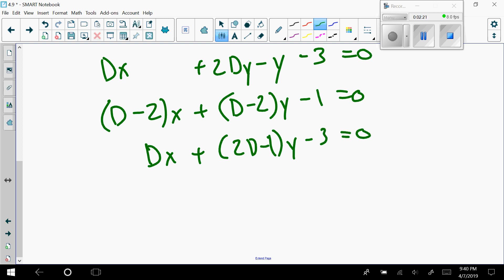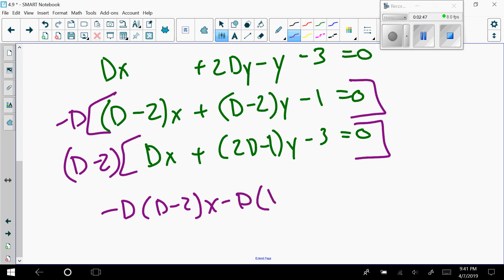Now we're down to making a choice: which variable looks easier to get rid of? I think the x's look pretty easy here. This would most likely be multiplied by a negative D by most of you, whereas this one down here would be (D minus 2). Bringing that through, I'd have negative D(D minus 2)x. I could put a minus here, minus D times (D minus 2).